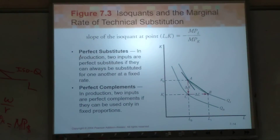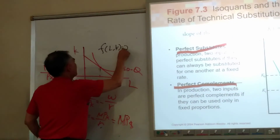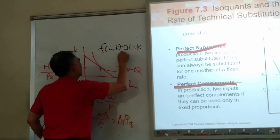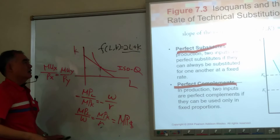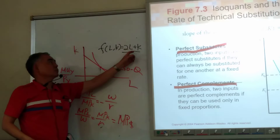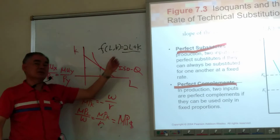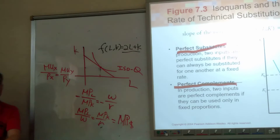For consumers you have perfect substitutes and perfect complements. The same thing applies to production. We talked about this in the final exam: if Q(L,K) = 2L + K, this is perfect substitutes — one unit of capital can be substituted by two units of labor.